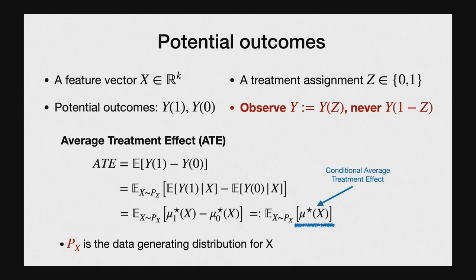Given this notation, the standard estimate is usually the average treatment effect, which is simply the mean difference between Y1 and Y0. I'm writing it as the difference between conditional means — the first conditional mean mu1, the second mu0 — and the difference is mu(X). So mu(X) is a personalized notion of the treatment effect for an individual represented by feature vector X; it's often called the conditional average treatment effect, or CATE. The ATE is simply an average of mu(X) over the study population P(X).